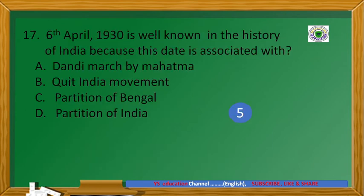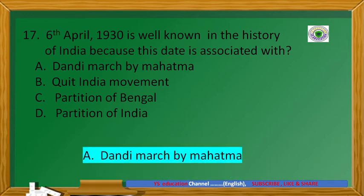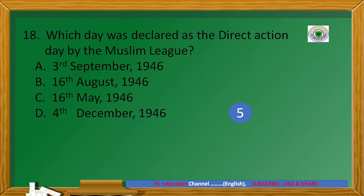6th April 1930 is well known in the history of India because this date is associated with the Dandi March. Which day was declared as the Direct Action Day by the Muslim League?